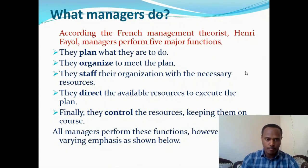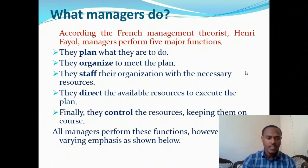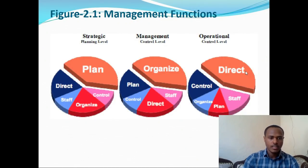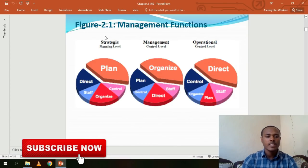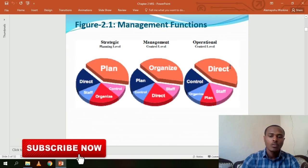The five major functions of managers are planning, organizing, staffing, directing, and controlling. Planning means setting organizational goals. Top-level or strategic managers focus mainly on planning, middle or control-level managers focus on organizing, and operational-level managers focus mainly on directing.